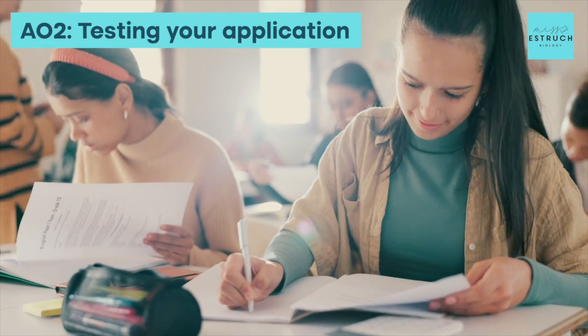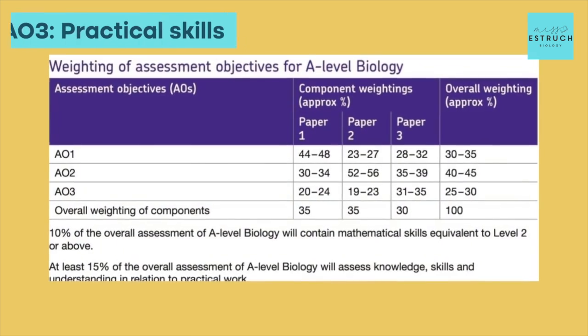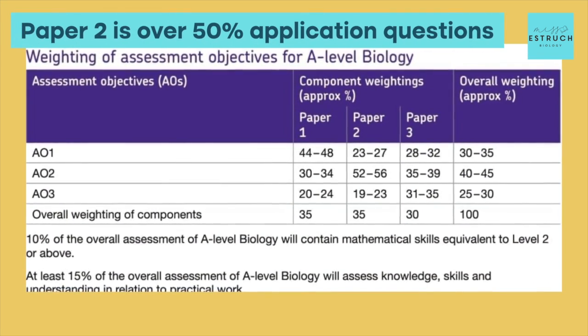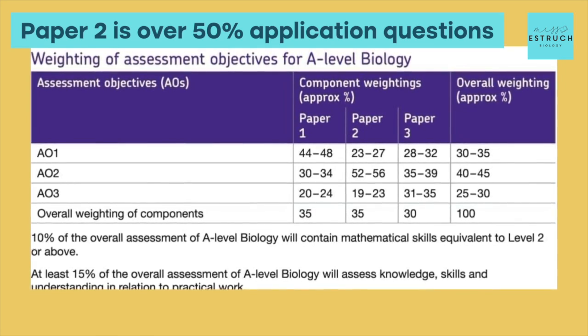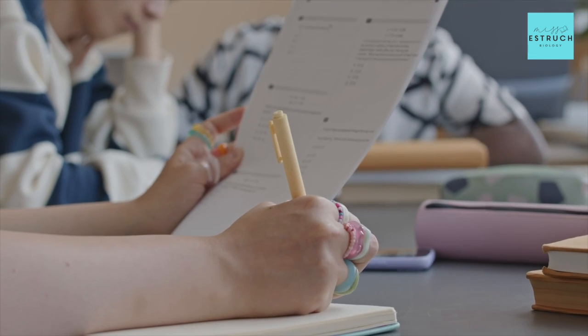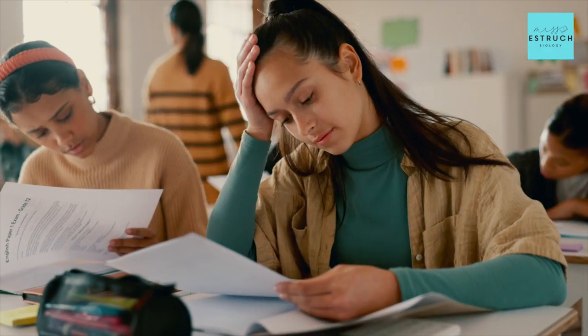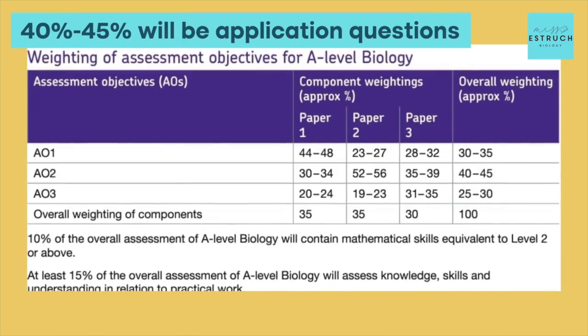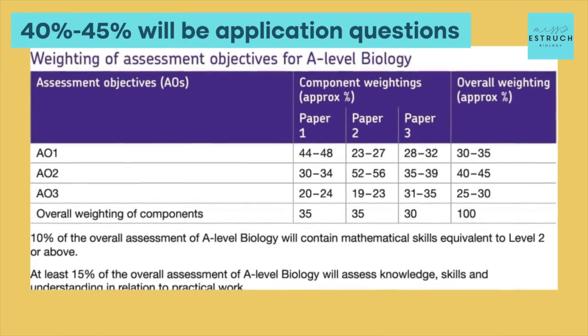In that table, AO1 generally means testing your knowledge of the theory and practicals, AO2 means testing your application of theories and practicals, and AO3 is more like practical skills in general. You can see that Paper 2 is over 50% application questions, which means if you aren't doing exam technique practice — particularly application — you're probably not going to do very well on Paper 2. Across the whole A-level, 40 to 45% of your marks will be application questions.